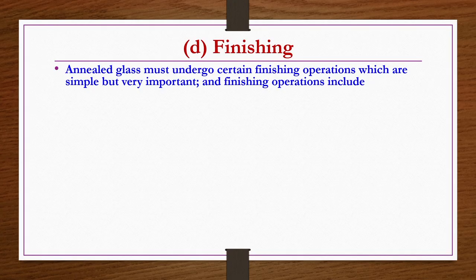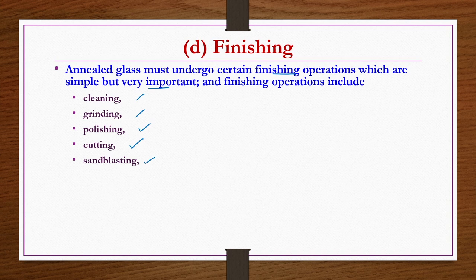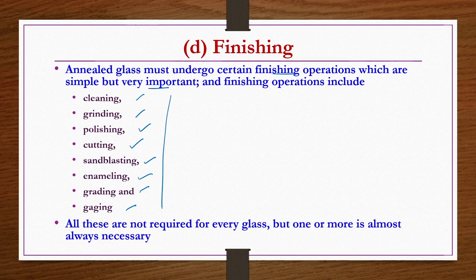The last step is finishing. Annealed glass must undergo certain finishing operations that are simple but very important. These include: cleaning, grinding, polishing, cutting, sandblasting, enameling, grading, and gauging. Not all steps are required for all types of glasses, but depending on the nature of the product and final requirements, at least a few of them are required. This concludes what we needed to discuss about glass industries in the present lecture.